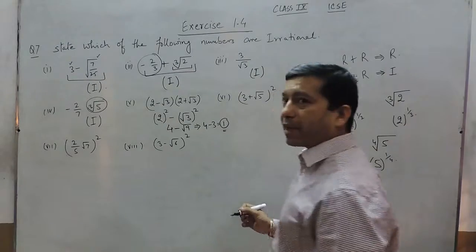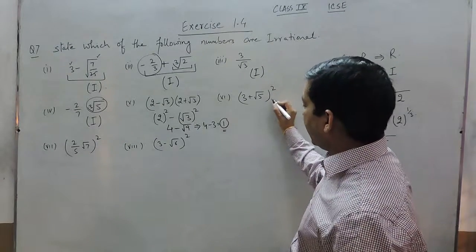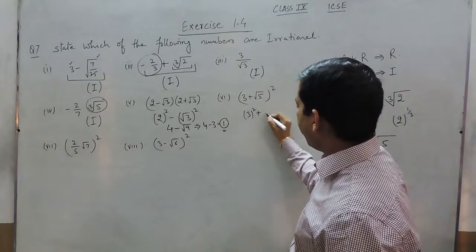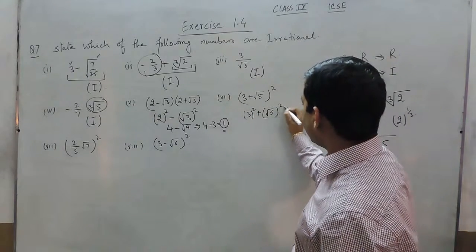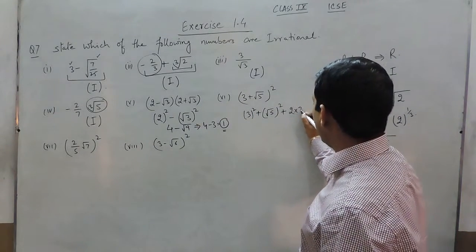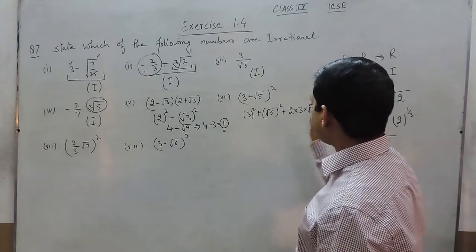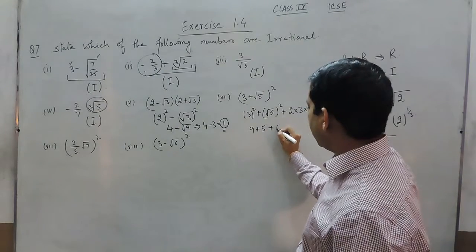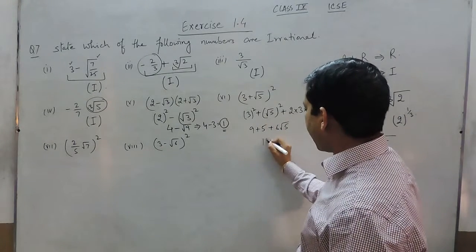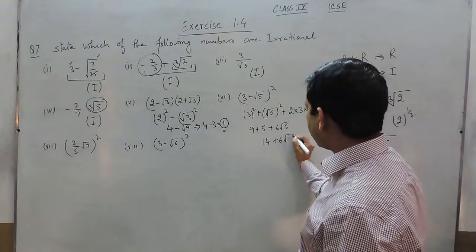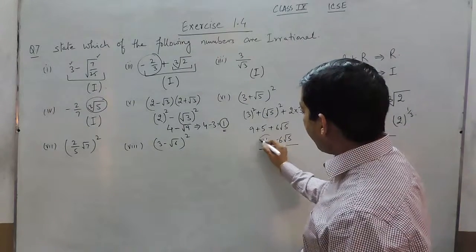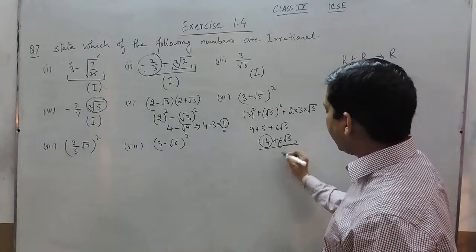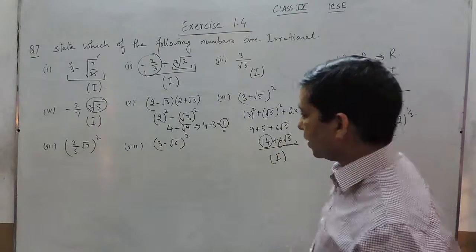When we solve (3 + √5)², this is (x + y)² = x² + y² + 2xy. Adding this: 9 + 5 + 6√5, which can be written as 14 + 6√5. Now 14 is a rational number while 6√5 is an irrational number, so the total will be considered irrational.